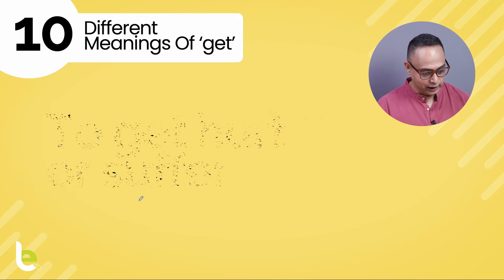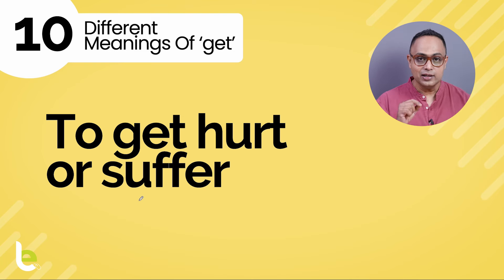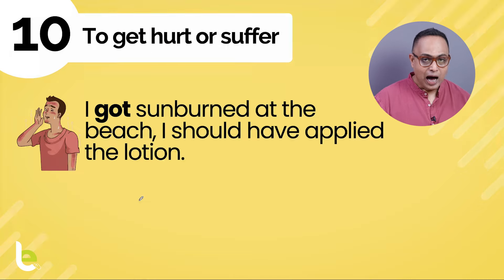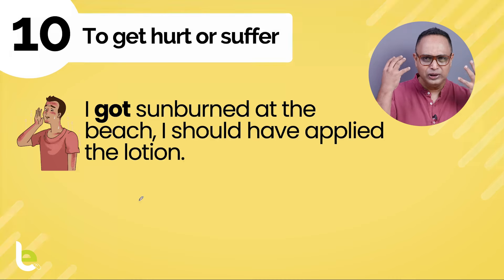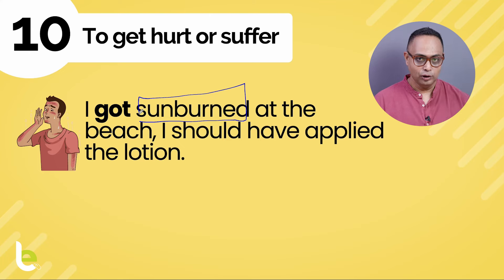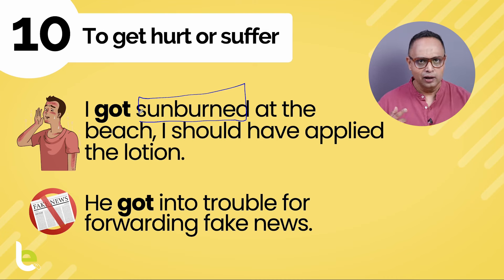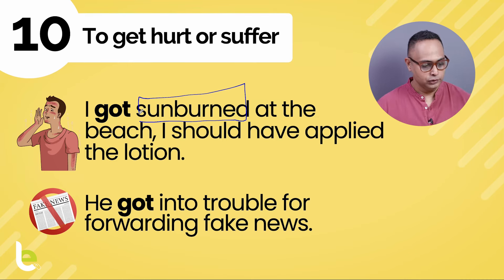The tenth use is to get hurt or suffer — yani, chot lagna ya kisi cheez ka bura asar jhhelna. First example: 'I got sunburn at the beach. I should have applied the lotion.' — bahut dhuup thi, suraj ki wajah se puri skin jal gayi — mujhe sunscreen lotion lagana chahiye tha. Next: 'He got into trouble for forwarding fake news.' — fake news forward karne ke liye woh kaafi mushkil mein pad gaya — even the police can come after you.